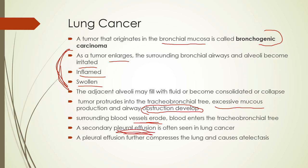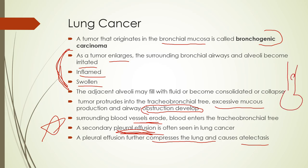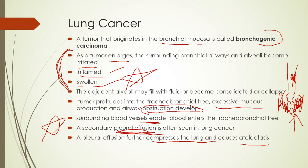Surrounding blood vessels will erode as the tumor enters the tracheobronchial tree. Pleural effusions are pretty common with these patients. Pleural effusion further compresses the lung and causes atelectasis — so not only is there collapse from the tumor blocking gas from airways, but also compression atelectasis from the pleural effusions. Because of the swelling and inflammation, this is what makes it a restrictive disorder. The tumor could also obstruct the airway, but overall it's restrictive in nature.